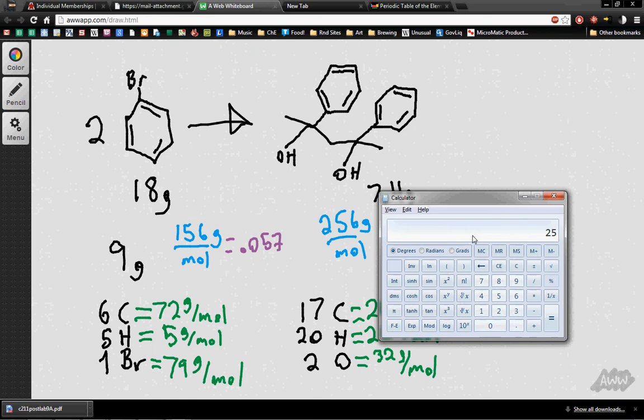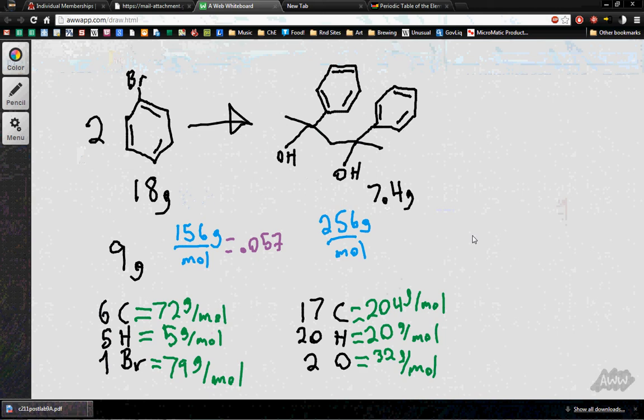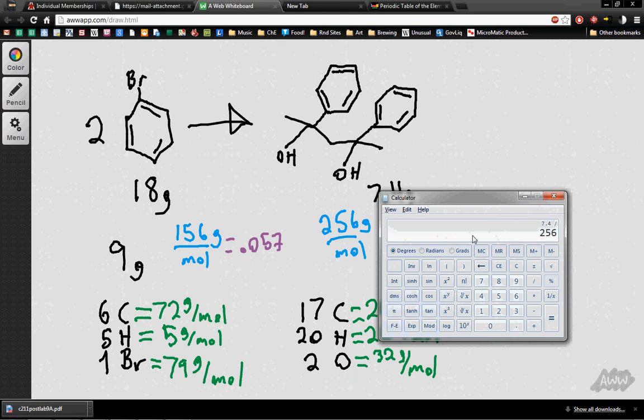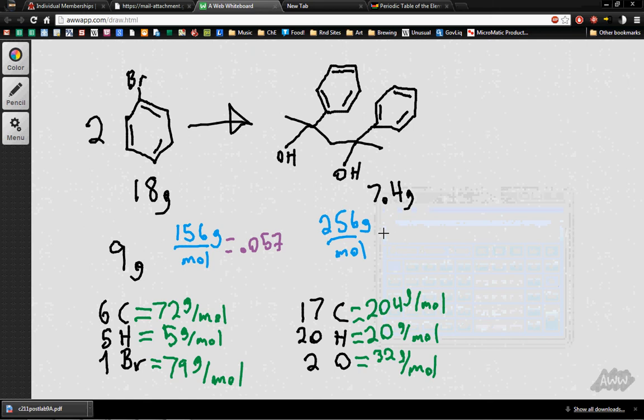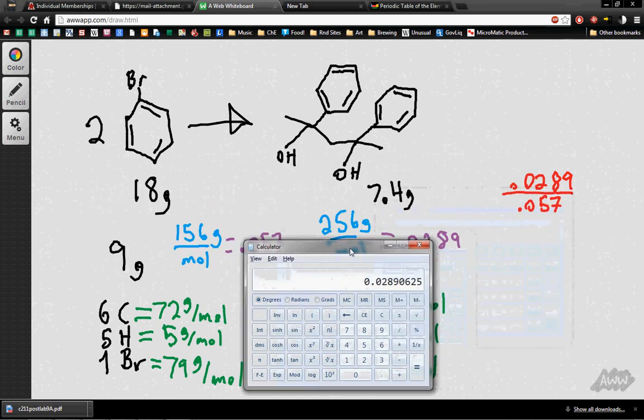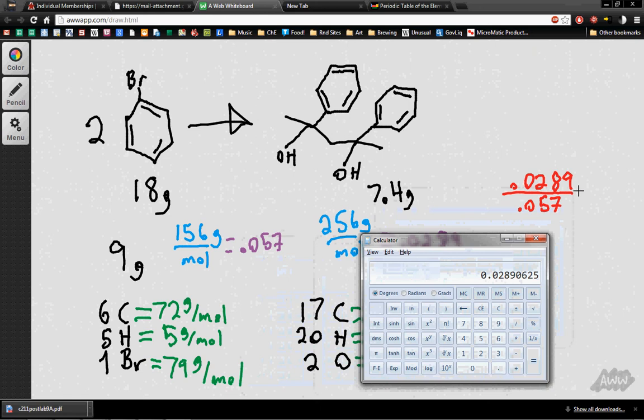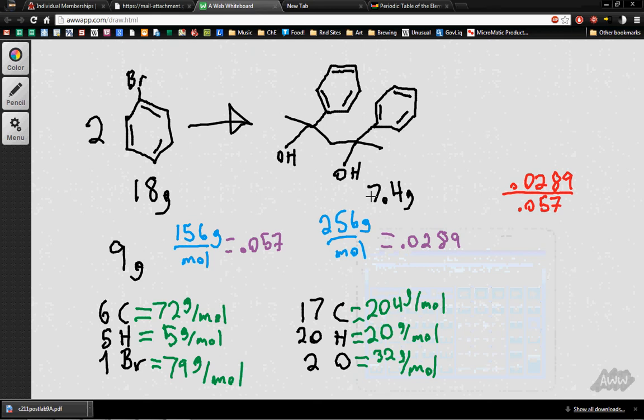And how many moles of this other guy will we have? So we've got 7.4 grams divided by 256. So we've got 0.0289. So our final answer is going to look like, so we got 0.0289 moles out of 0.057. So we expected, our theoretical yield should have been 0.057, but we really got 0.029. So we divide these two numbers, and we get a 50.7% yield. So that's how you do this problem.